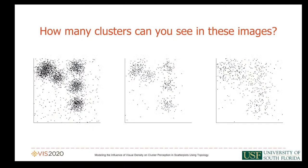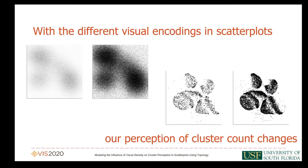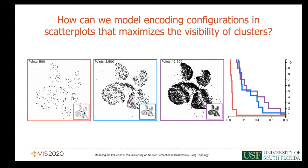How many clusters can you see in these images? With different visual encodings in scatter plots, our perception of cluster count changes. We developed models that consider how visual density influences cluster perception. Further, we demonstrate using a threshold plot to optimize the saliency of clusters.